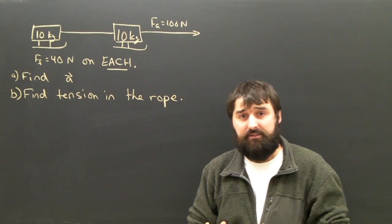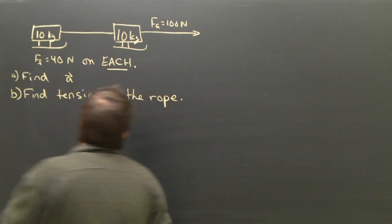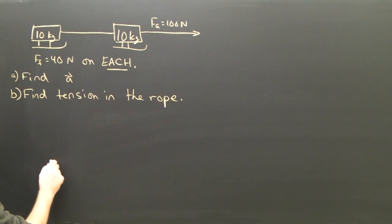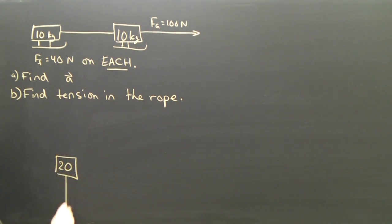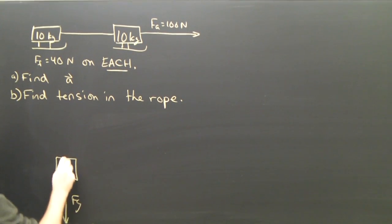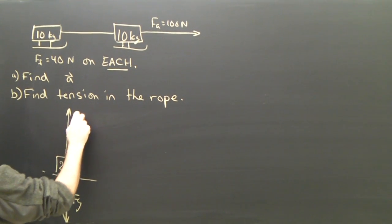So to find the acceleration of the whole system, we obviously have to draw a free body diagram of the whole system. So I will do that here. The total mass is 20 kilograms. Is there gravity? Yes, of course, Fg. It's on the ice or the snow, so there is a normal force, Fn.